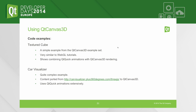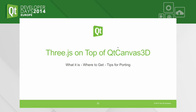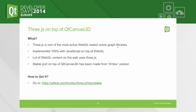Now let me talk a bit about Three.js, which I've mentioned quite a few times. It's one of the most active WebGL-based scene graph libraries out there — I think it gets around 15 to 20 commits per day. It's implemented in 100% JavaScript on top of WebGL. There is a lot of WebGL content out there that uses Three.js. We have a stable port available for Qt Canvas 3D, made from the r67 dev version. I've stuck with this one because they started changing the API, which breaks compatibility with existing content.